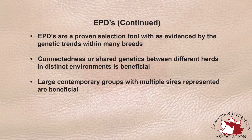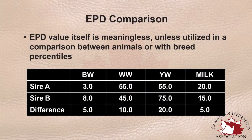That can be compared with the circumstance where we have a small contemporary group of, say, five heifers, and they all come from the same sire — we don't have a lot of variability to try and assess the genetic differences between those animals. For instance, if we have a weaning weight EPD of sire A for 55 pounds and we have a weaning weight EPD for sire B of 45 pounds, there's a 10 pound difference in those two values.